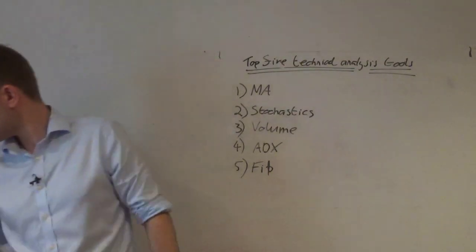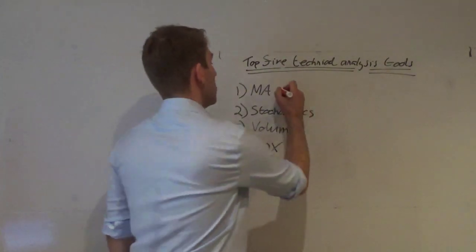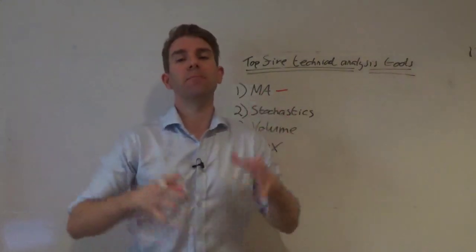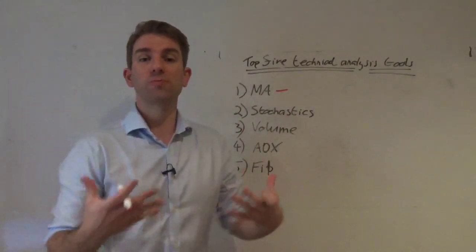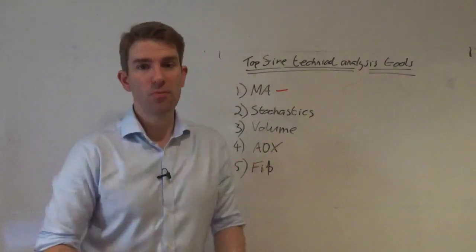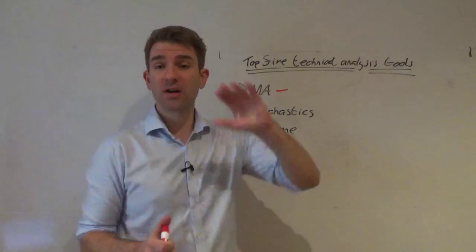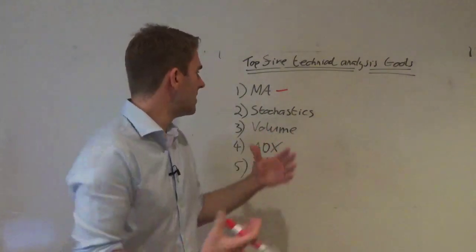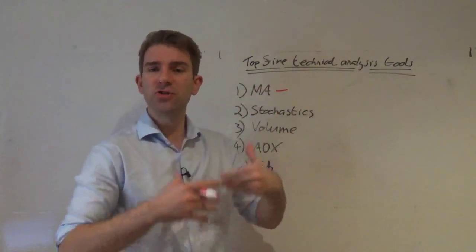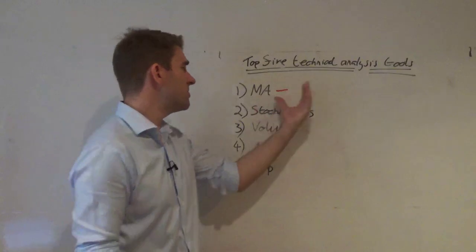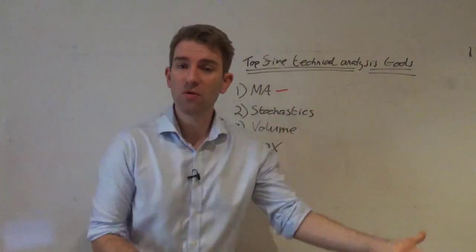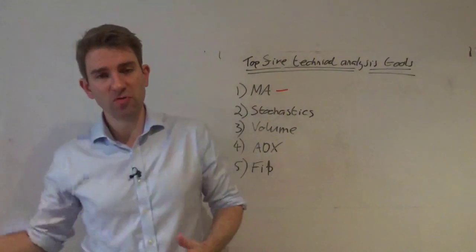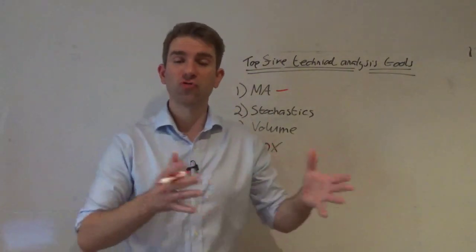Number one: moving averages. This is a very simple way of displaying what's been going on with price. The beauty of moving averages is you can go from a very low value — like a 5-period or 10-period — all the way up to a long 100 or 200-period, and adjust what you're trying to see.